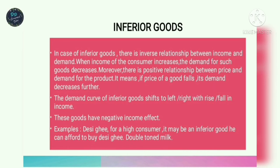Whether a good is normal or inferior depends on consumer income, habits, and fashion. For example, double-toned milk may be a normal good for a poor consumer, but it is an inferior good for a rich consumer, because for rich people it is not a primary priority. Similarly, traditional design clothes may be a normal good for a normal family but an inferior commodity for a rich person.